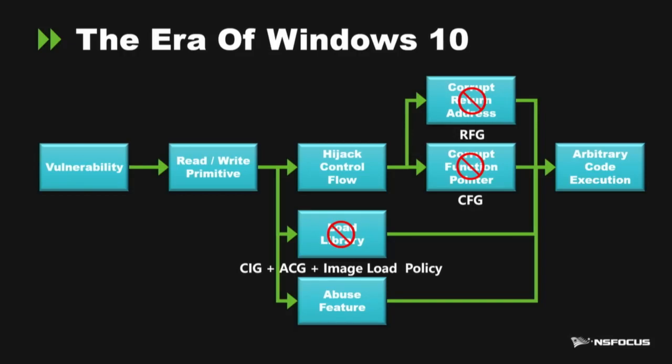For the feature-abusing techniques, there is no generic mitigation. They can only be resolved case by case. This is the second problem of current mitigations.